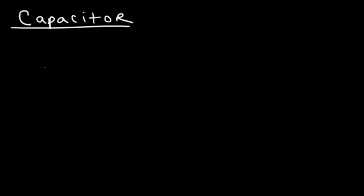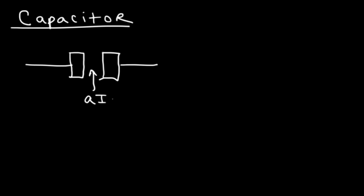A capacitor uses two metal plates separated by an insulator, and it basically stores charge by taking electrons from one side and pumping them towards the other side. The insulator could be air, it could be paper, it could be water — anything that doesn't conduct electricity. So that's basically what a capacitor is: two metal plates separated by an insulator that stores electrical charge.